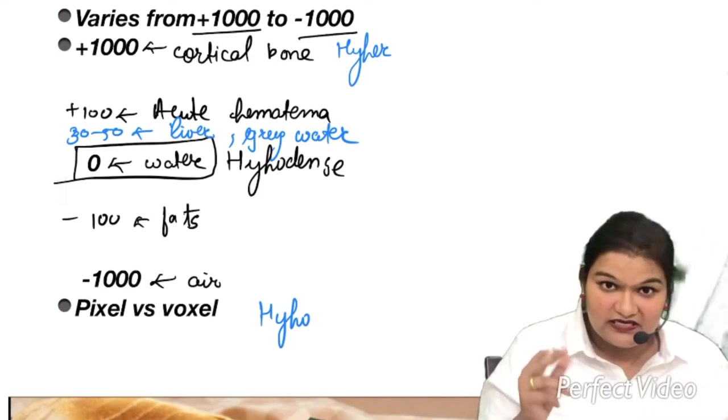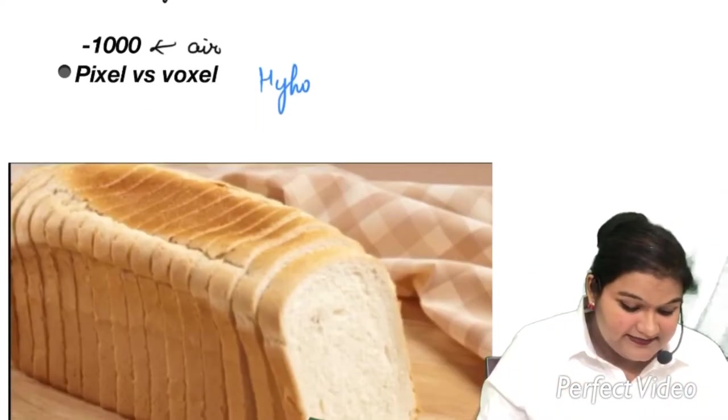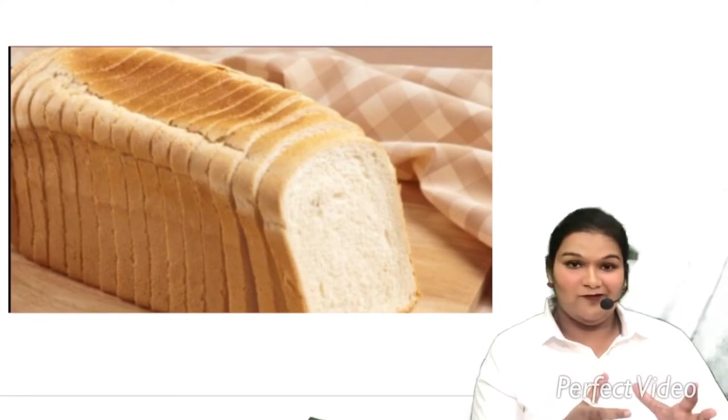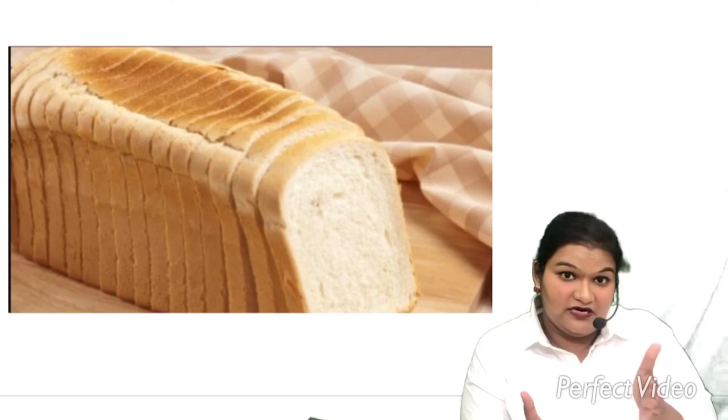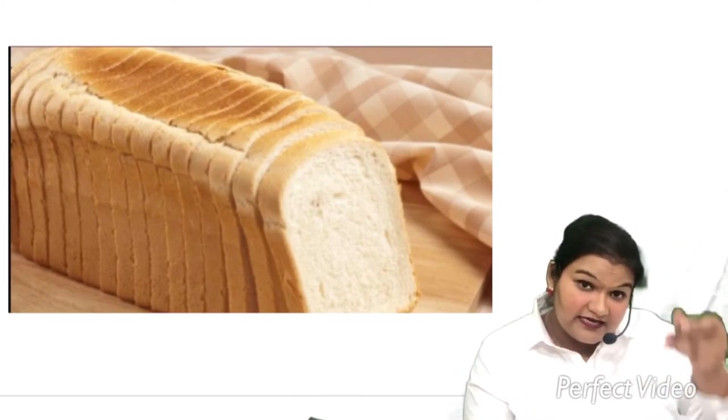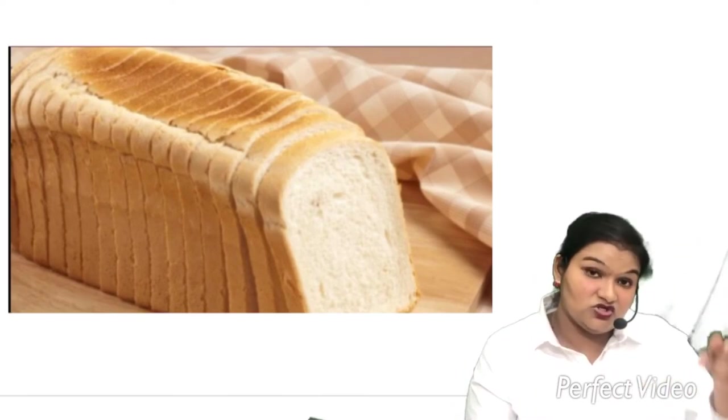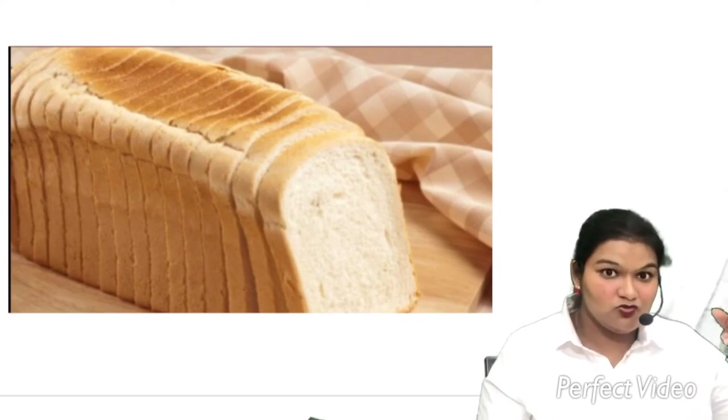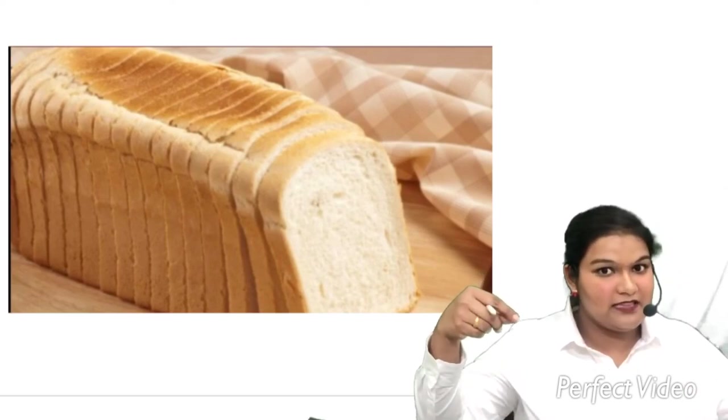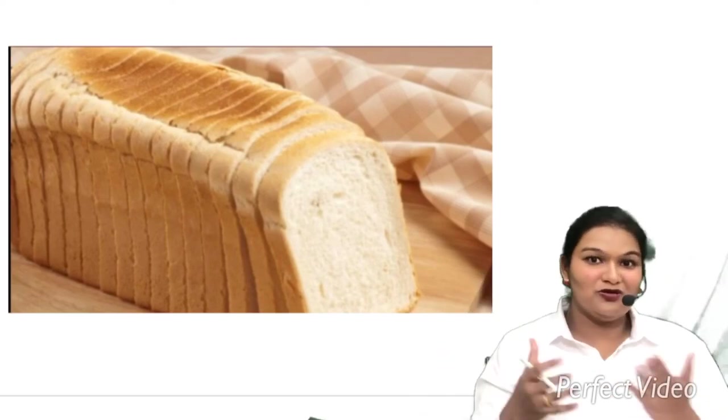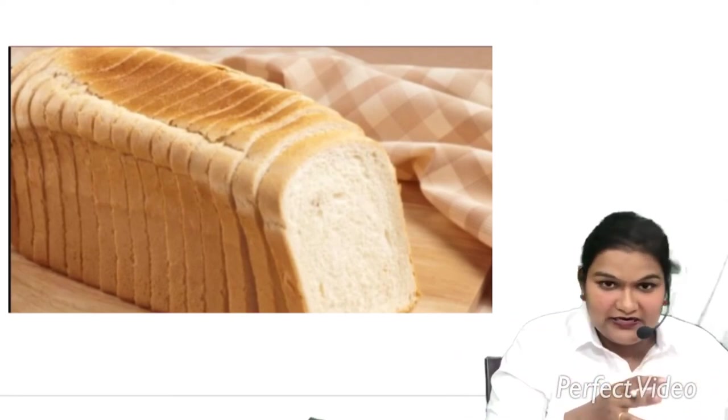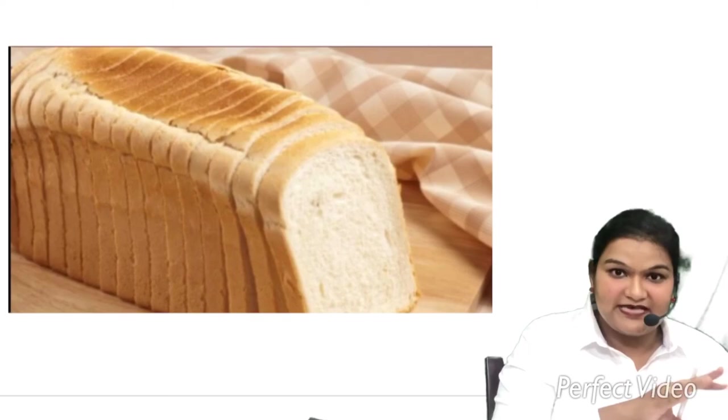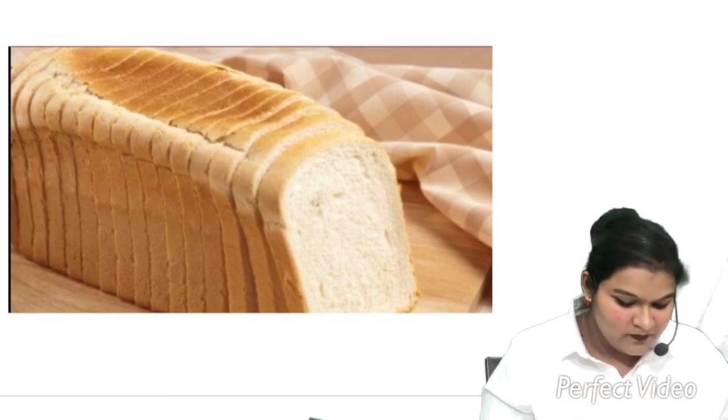So here we are done with the HU scale. Now let us see this loaf of bread. Here we have loaf of bread sliced. Same is the CT scans at different layers. You get slice of that particular structure of particular region. So one slice of bread, one scan. Two slice of bread, two scans at different level. So here we can correlate the slice or the scans at different level with the slice of bread.